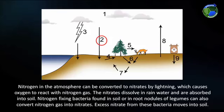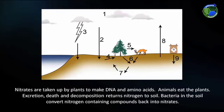The nitrates dissolve in the rainwater and are absorbed into the soil. Nitrogen-fixing bacteria found in the soil, or in the root nodules of legumes, can also convert nitrogen gas into nitrates. Excess nitrate from these bacteria moves into the soil. Nitrates are taken up by plants to make DNA and amino acids.